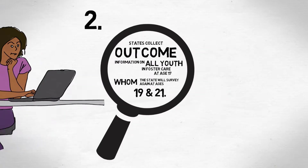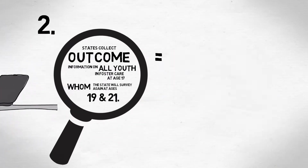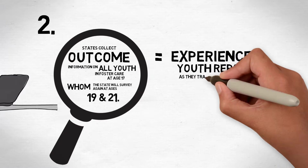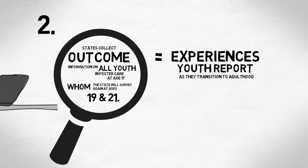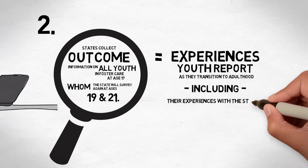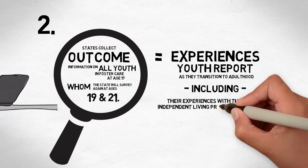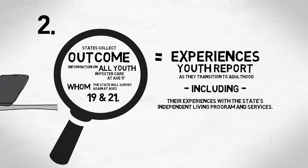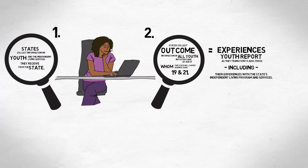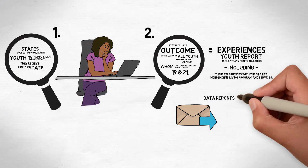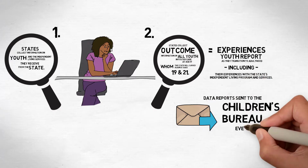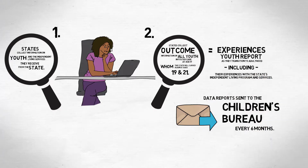By outcomes, we mean the experiences youth report as they transition to adulthood, including their experiences with the state's independent living program and services. States are then required to provide data reports on these services and outcomes to the Children's Bureau every six months.